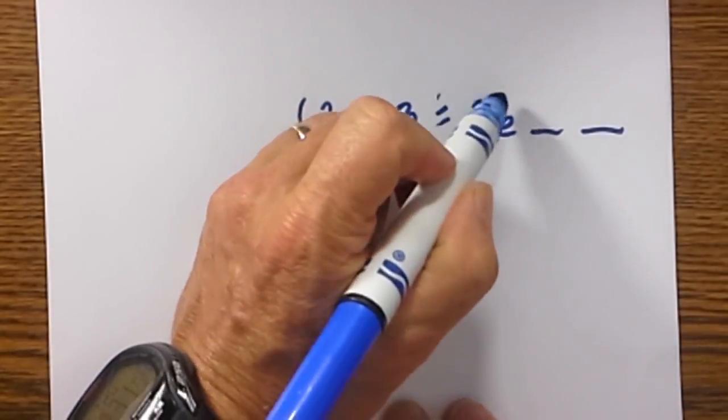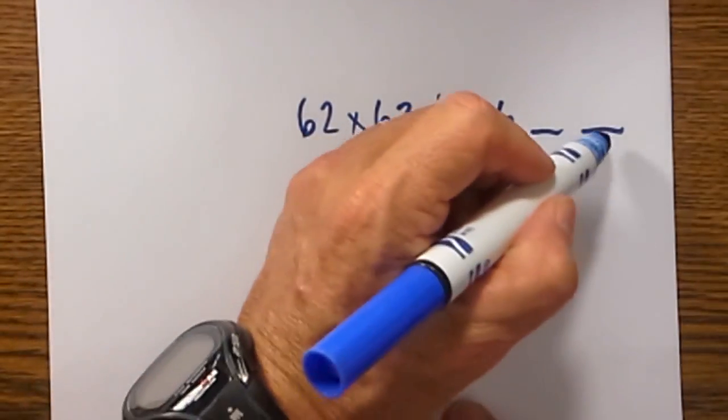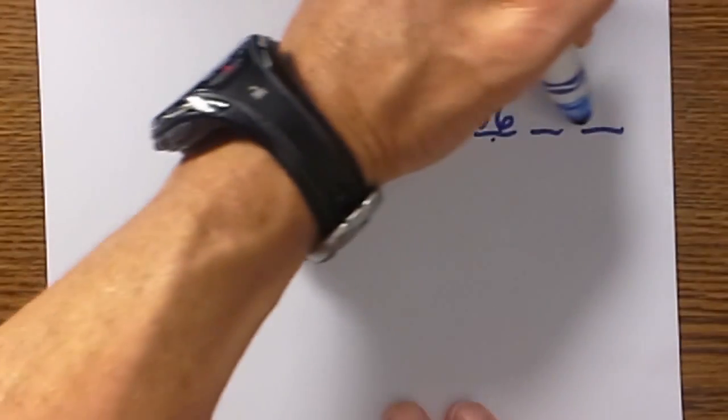Since there is not a number to the left you will not be carrying anything. Next for the last digit you take 2 times 3 which is 6.